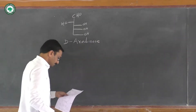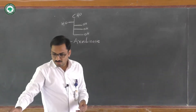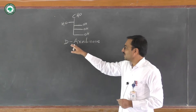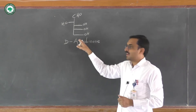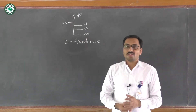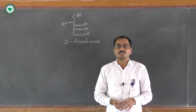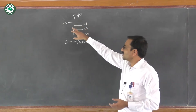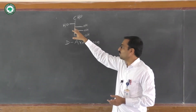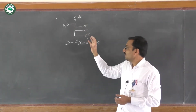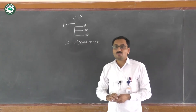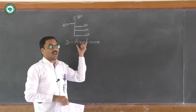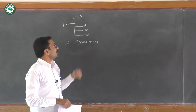Look at the starting precursor for the synthesis of shikimic acid. We use D-arabinose as a carbohydrate molecule. Carbohydrate molecules play an important role in the synthesis of many target molecules because they consist of different types of functional groups — they are polyhydroxy aldehydes or ketones. In this case, we use D-arabinose as a starting precursor; it consists of four hydroxyl groups and one aldehyde group.